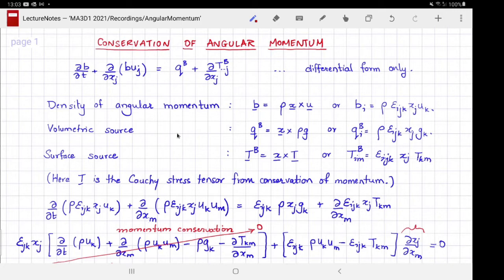You will recall that the definition of angular momentum is X, the position vector, cross product with linear momentum. Therefore, its density and all quantities related to angular momentum are the position vector crossed with the corresponding linear momentum quantity. For example, the density of angular momentum is X crossed with the linear momentum density, which is also written in index form.